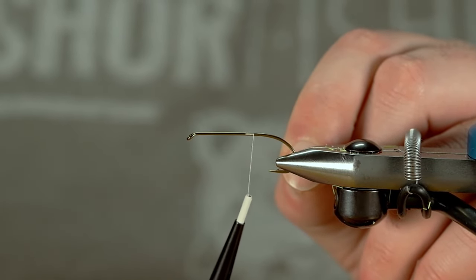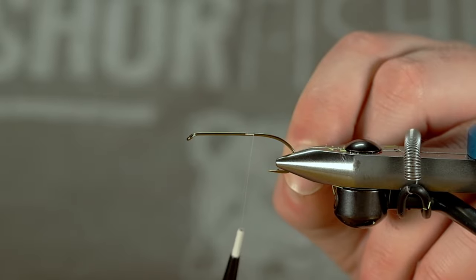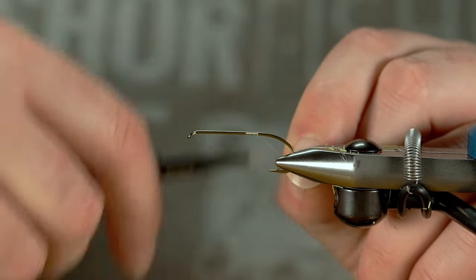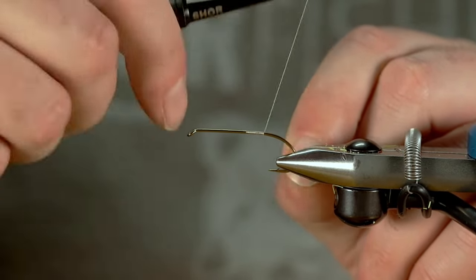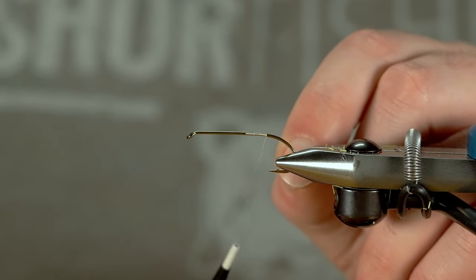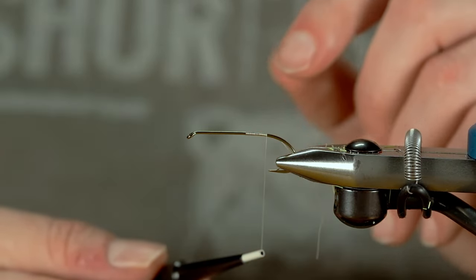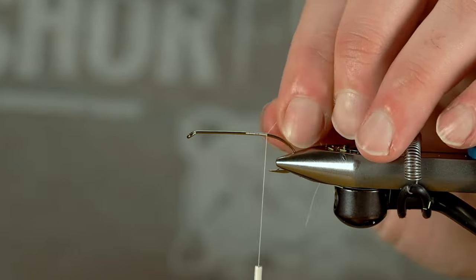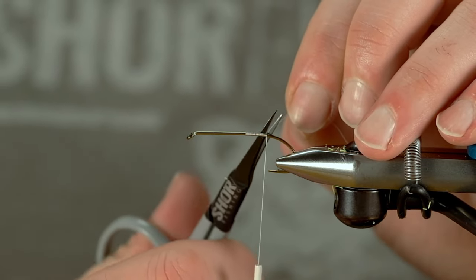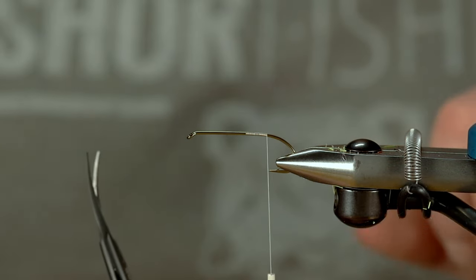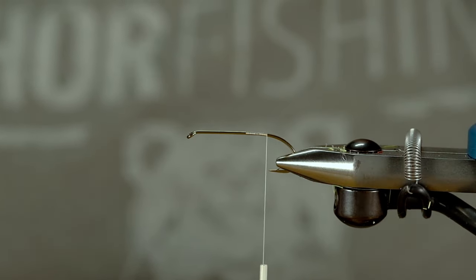When I'm spinning deer hair, I tend to use a heavier thread just so I can get some more pulling power for that fur. Today we're using Danville's 70. That's good stuff. I usually use UTC 170, but this was the first roll of white thread that I saw, so why not.